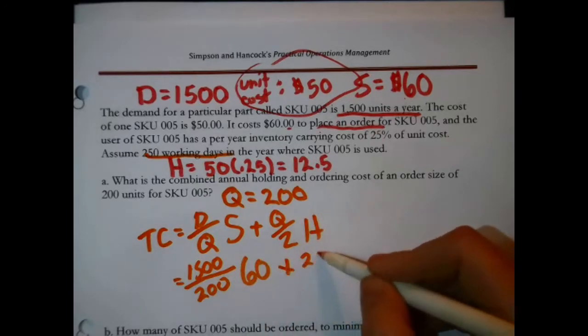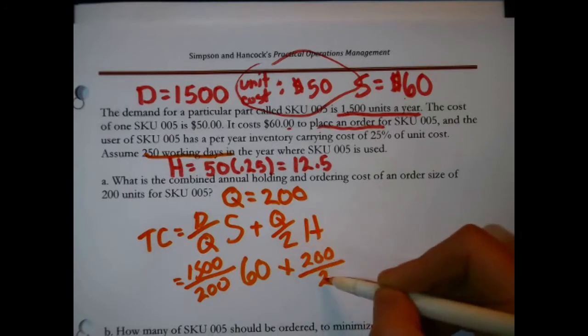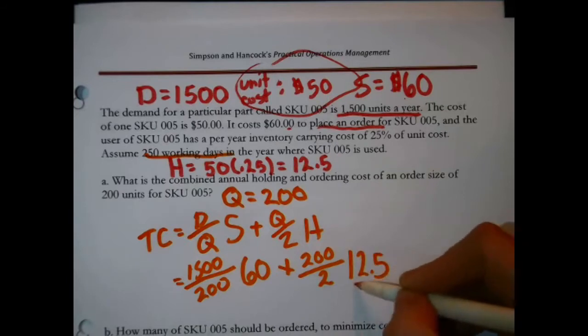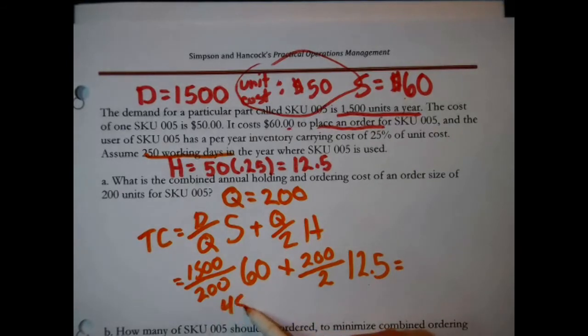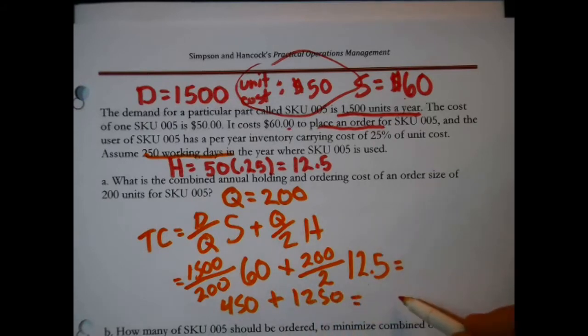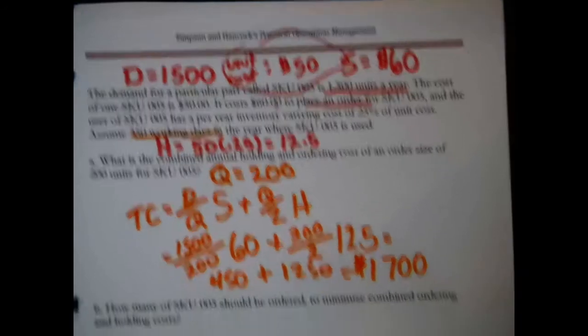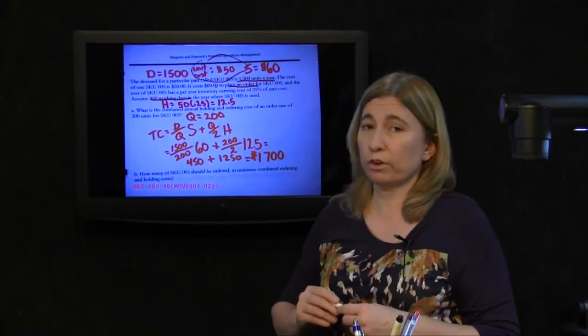Plus, they're proposing Q equals 200. We divide that by 2 to get average inventory. And then say that multiplied by 12.5, because that's H, the cost of holding one unit in inventory for a year. I get $450 in ordering costs and $1,250 in holding costs for a total bill annually, combined ordering holding costs of $1,700.